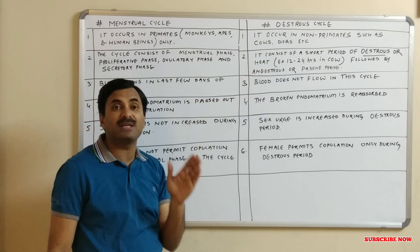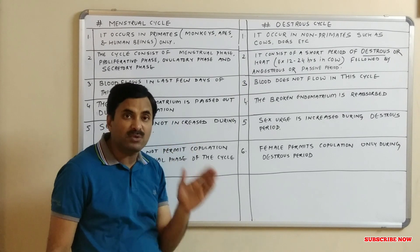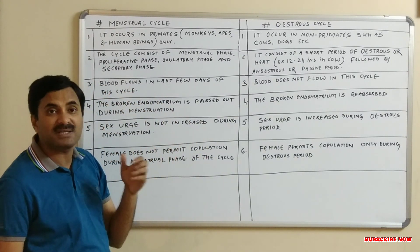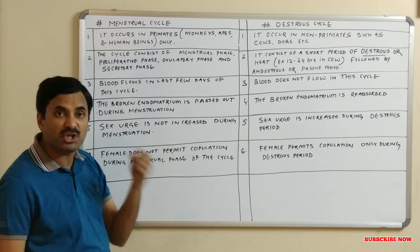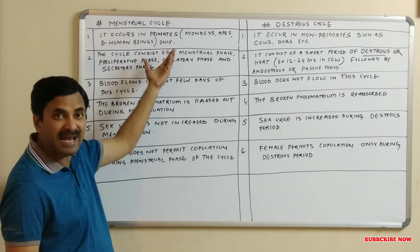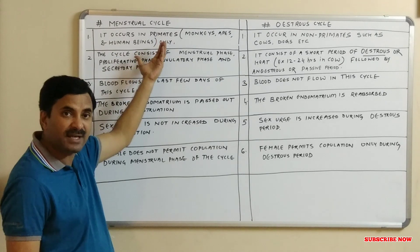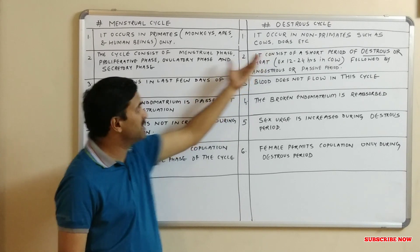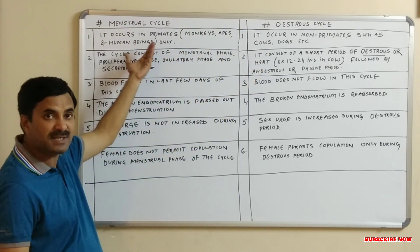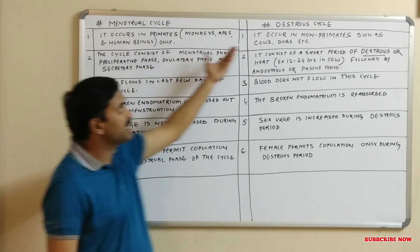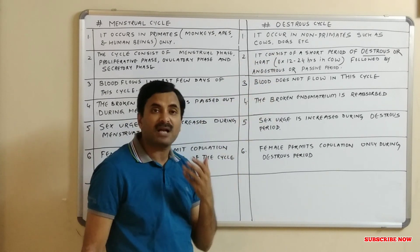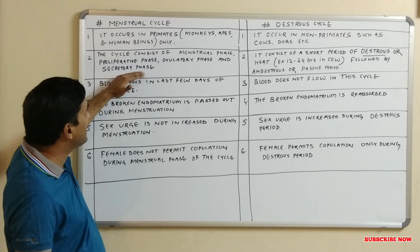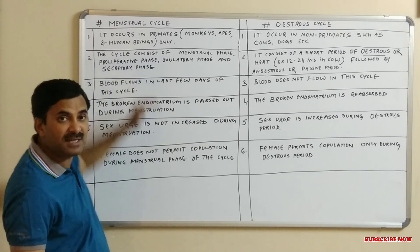The estrous cycle is not found in primate mammals. It is found in non-primate mammals such as cows, dogs, sheep, etc. So the chief difference is that the menstrual cycle occurs in primates — monkeys, apes, and human beings — while the estrous cycle occurs in non-primates such as cows, dogs, and sheep.